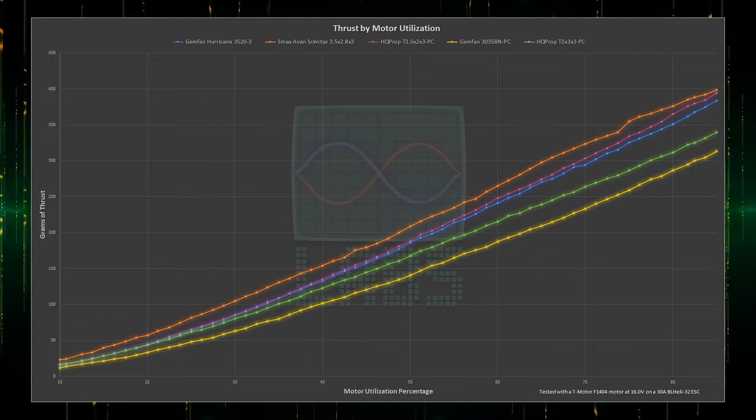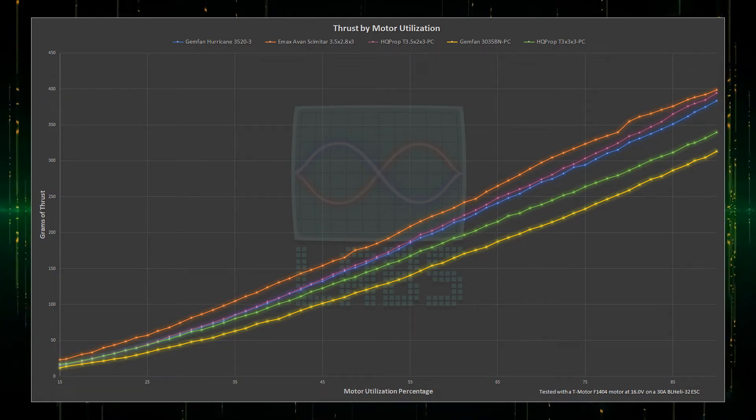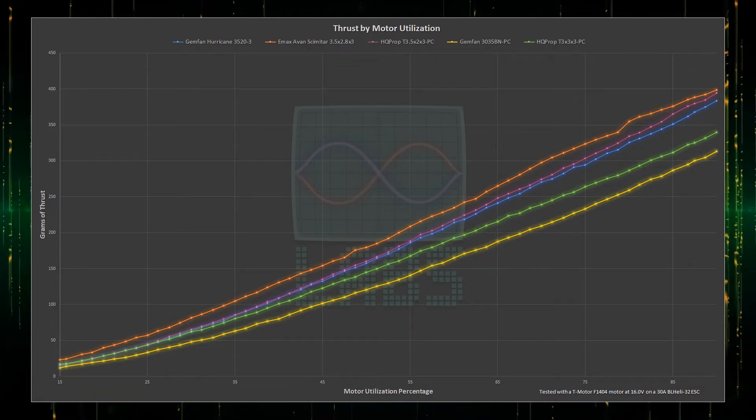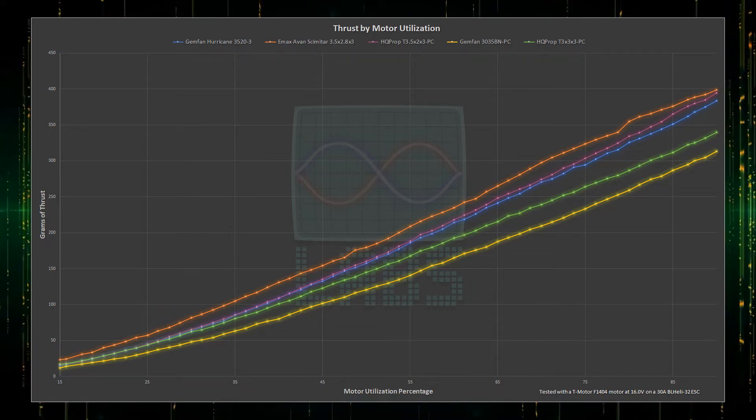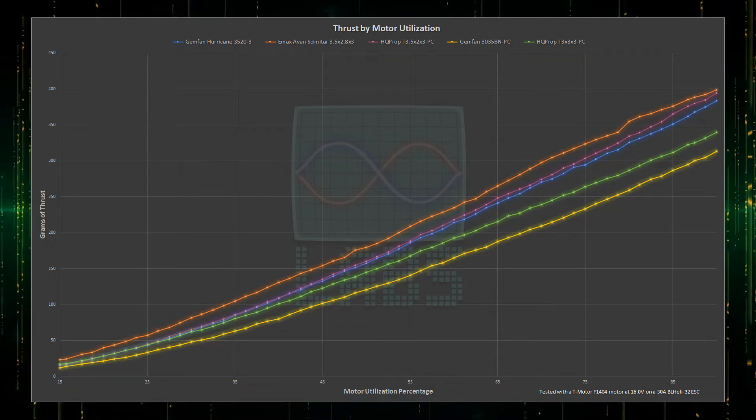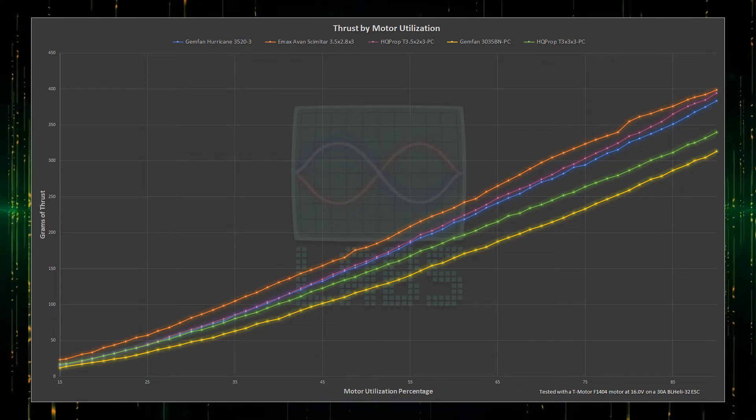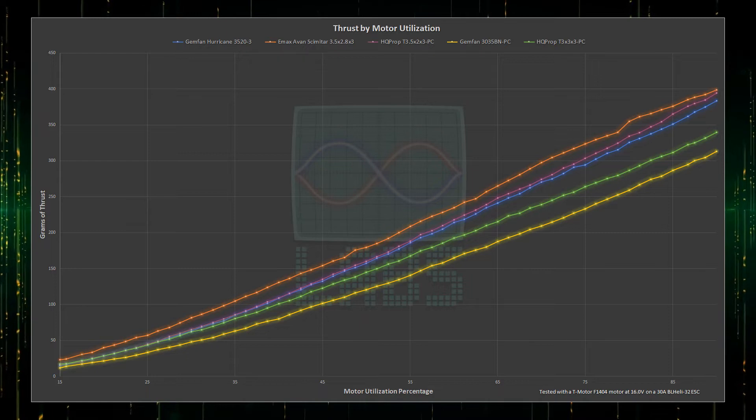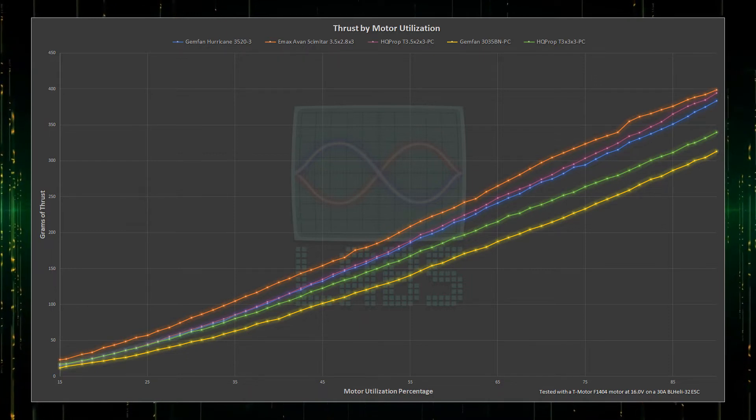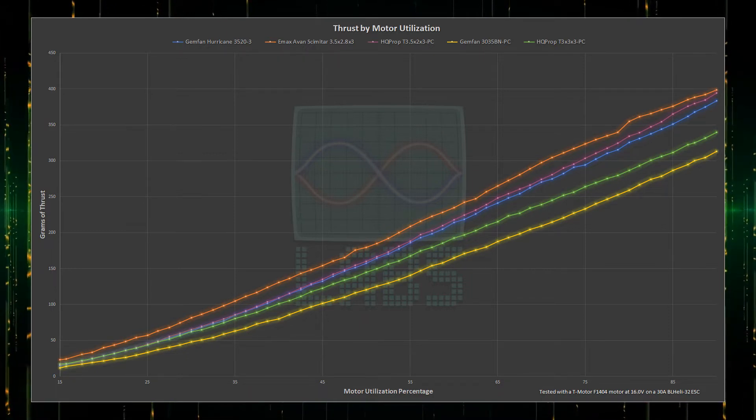Let's start with thrust! Out of the gate, the Emax Avan takes the lead with overall thrust across the throttle range. But as they approach the end of the throttle range, the lead shortens up to the point where the HQ Prop is almost tied. The Gemfan 3.5-inch is basically equal for the first 40% of the throttle range, but the HQ Prop slowly builds a slight lead, widening until the end. The 3.5-inch propellers have a definitive thrust advantage over the 3-inch propellers, but at what cost?